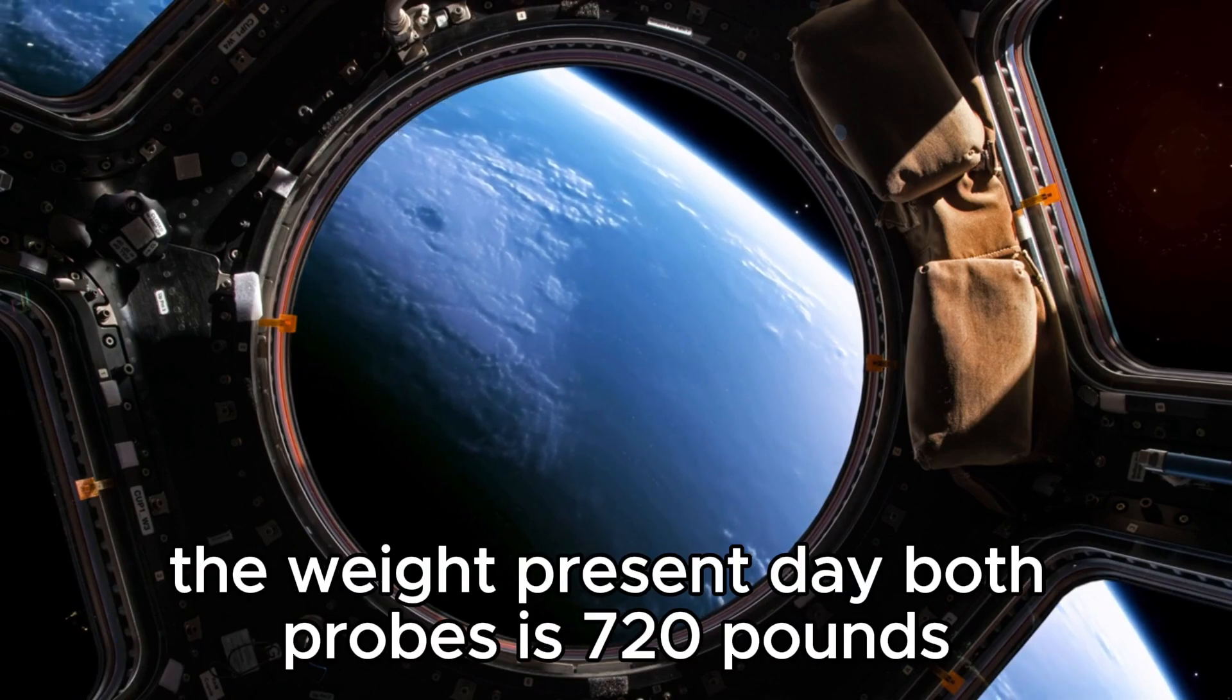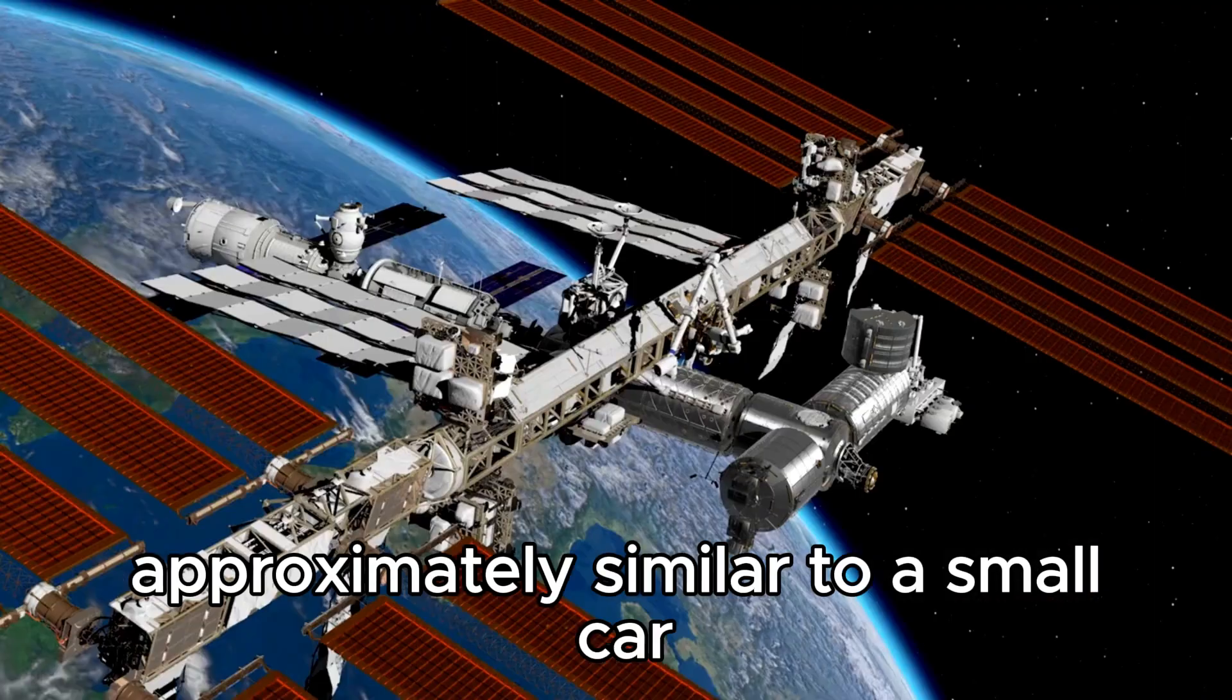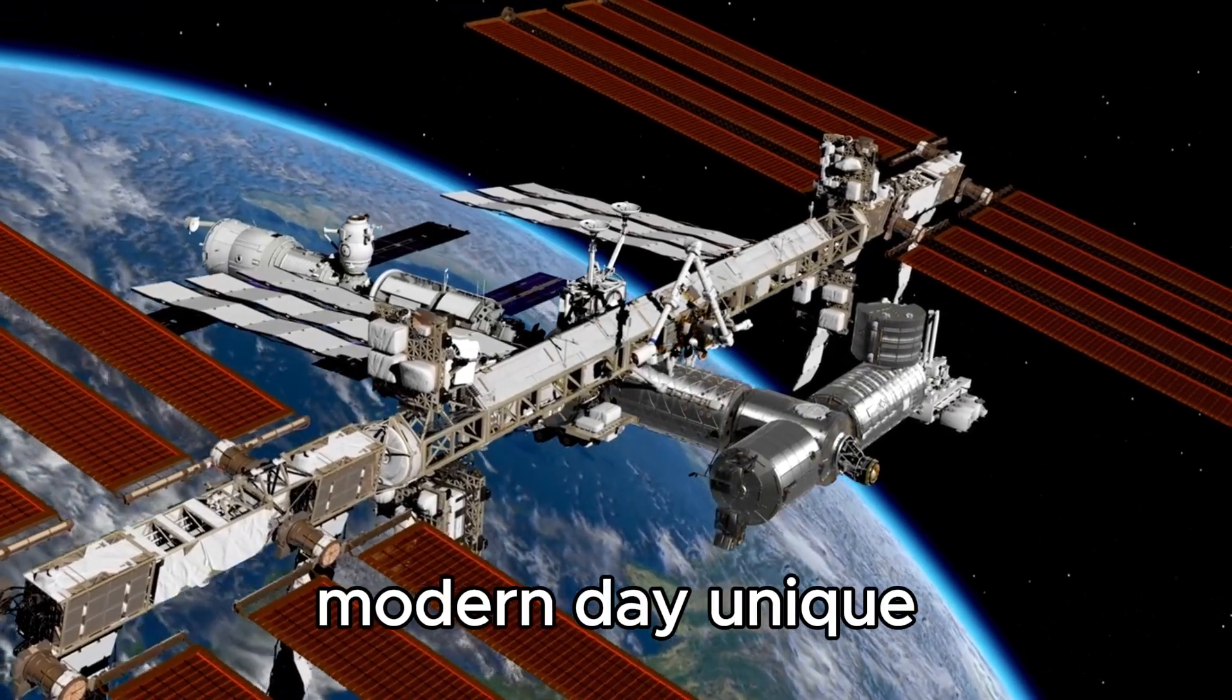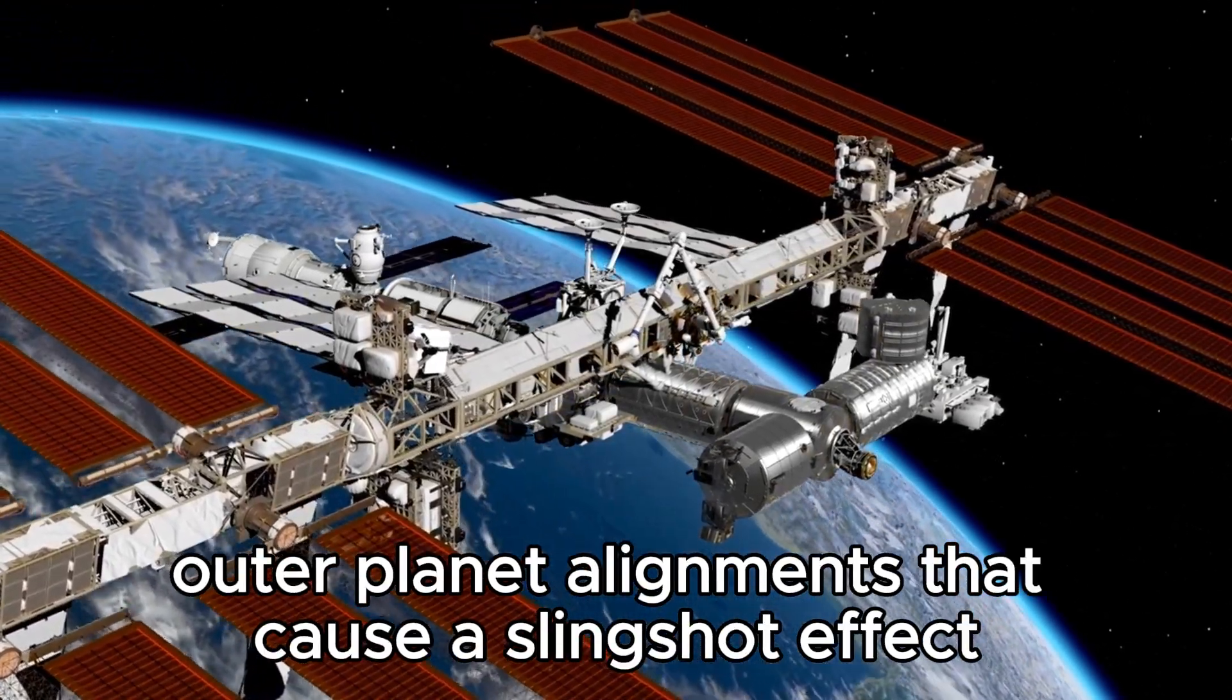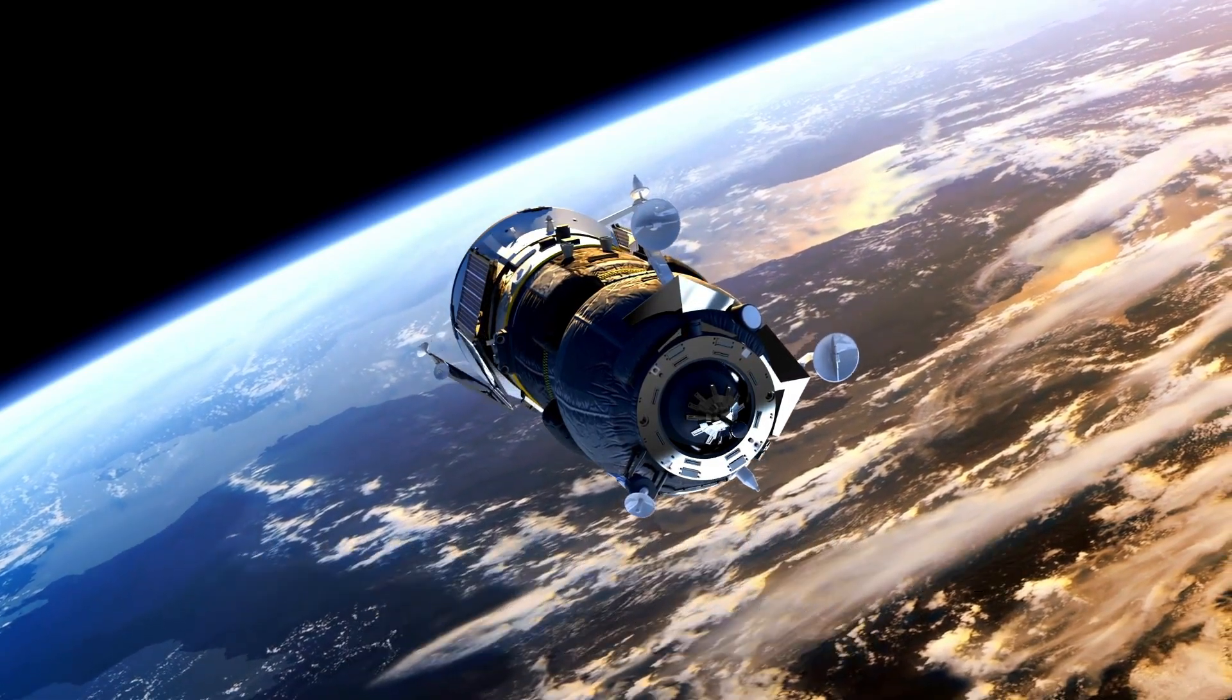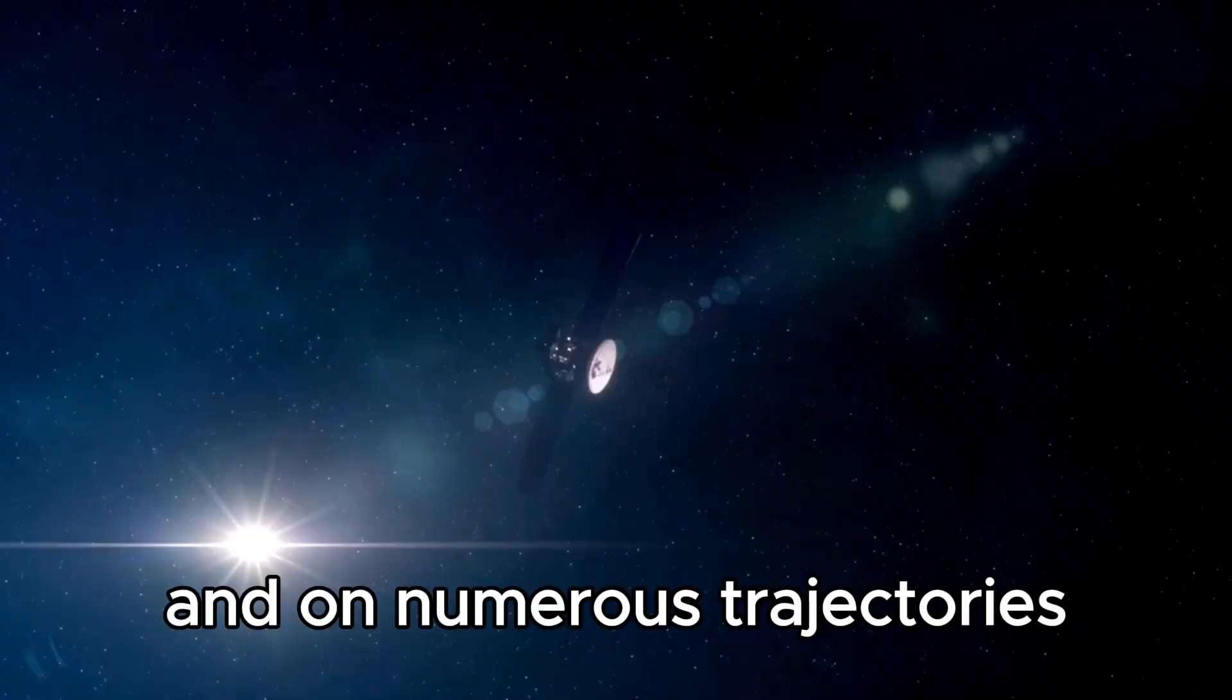The weight of both probes is 720 pounds, about similar to a small car. Both of them were released during a window of unique outer planet alignments that cause a slingshot effect to launch the spacecraft from one planet to another. They've had to move at various speeds and on numerous trajectories.